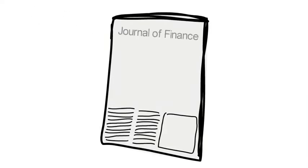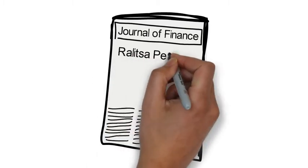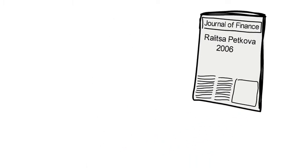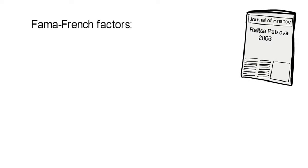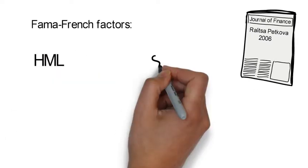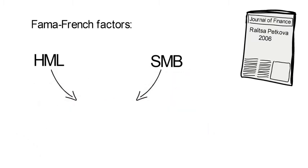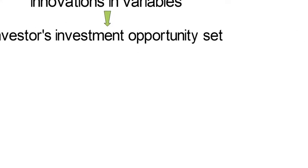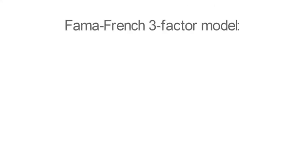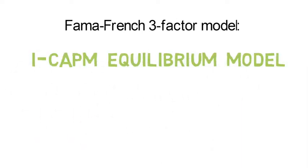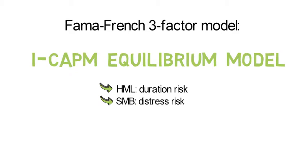The application is based on the JF publication of Professor Petkova in 2006. She finds that the Fama-French factors HML and SMB are correlated with innovations in variables that drive an investor's investment opportunity set. In that sense, the Fama-French three-factor model can be viewed as an ICAP-M equilibrium model where HML is a factor premium for duration risk and SMB is a factor premium for distress risk.